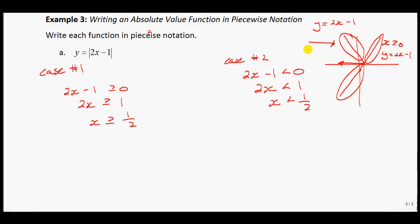You just get rid of the absolute value signs but put a negative in front of it. So this is y equals negative bracket 2x minus 1, which simplifies to y equals negative 2x plus 1.